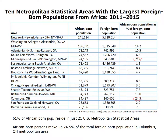There is strong evidence of concentration of the African-born population in certain metropolitan areas. Data from the American Community Survey shows that 61 percent of the African-born population reside in just 21 US metropolitan statistical areas. For instance, more than 240,000 African-born persons reside in the New York-Newark-New Jersey metropolitan statistical area. In some metropolitan areas, the African-born population is one of the most visible foreign-born groups — in the Columbus, Ohio metropolitan area, African-born persons make up nearly a quarter of the foreign-born population.